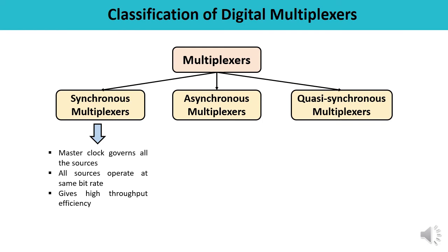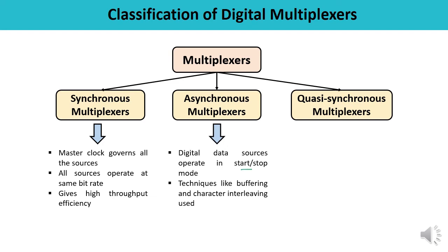The second category is asynchronous multiplexers. Here, all data sources are not in synchronism. Asynchronous multiplexers are used for digital data sources which operate in the start-stop mode. These sources produce data in the form of bursts of characters with variable spacing between the bursts. Techniques like buffering and character interleaving make it possible to merge the various sources' information into a synchronous multiplexed bit stream.